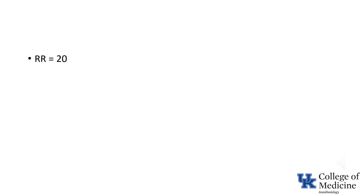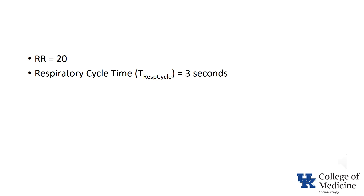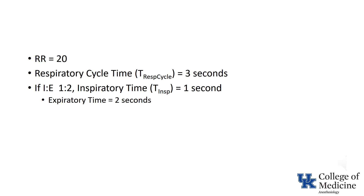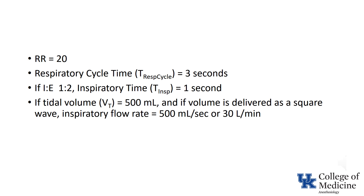Here are some sample calculations. Start with a respiratory rate of 20 breaths per minute — that means the respiratory cycle time is 3 seconds. With a normal I:E ratio of 1:2, the inspiratory time is 1 second and the expiratory time is 2 seconds. With a tidal volume of 500 mL delivered in 1 second as a square wave at a constant inspiratory flow rate, the inspiratory flow rate is 500 mL per second, or 30 liters per minute.